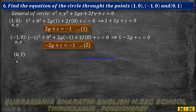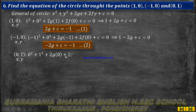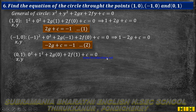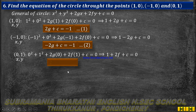Third point (0, 1): x equal to 0, y equal to 1. Substituting: 0 squared plus 1 squared plus 2g into 0 plus 2f into 1 plus c equal to 0. Since 0 squared and 2g into 0 are both 0, we get: 1 plus 2f plus c equal to 0, so 2f plus c equal to minus 1. This is equation number 3.